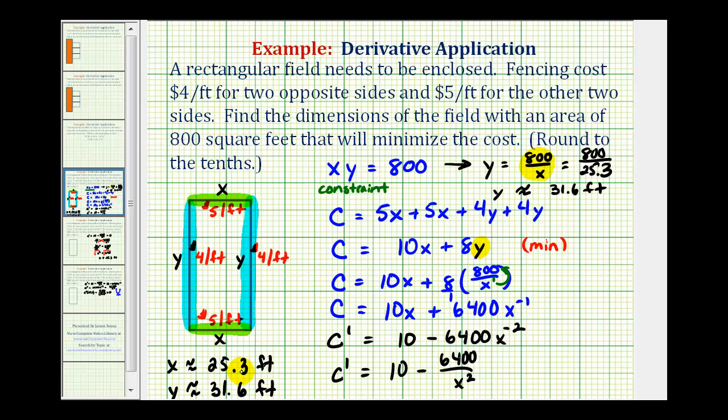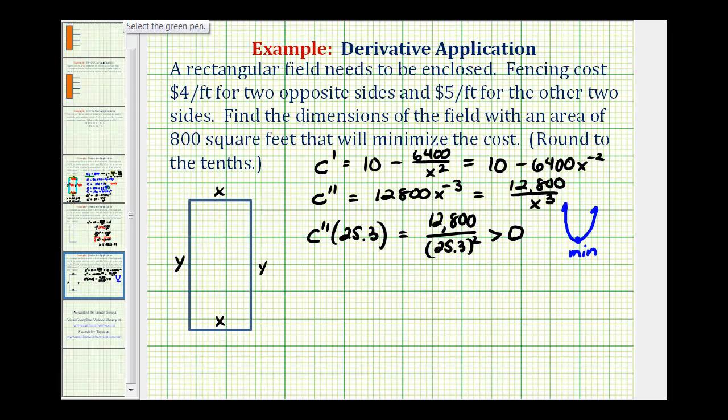If we take a look at our sketch, notice how we have less feet at the cost of $5 per foot, and we have more feet at the $4 per foot cost. Let's summarize all of this. The first question was find the dimensions of the field with an area of 800 that will minimize the cost. Well, the dimensions of the field are x feet by y feet, or 25.3 feet by 31.6 feet.